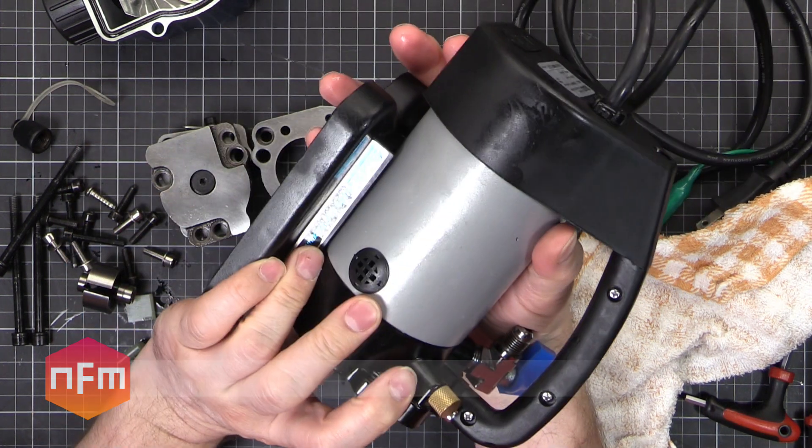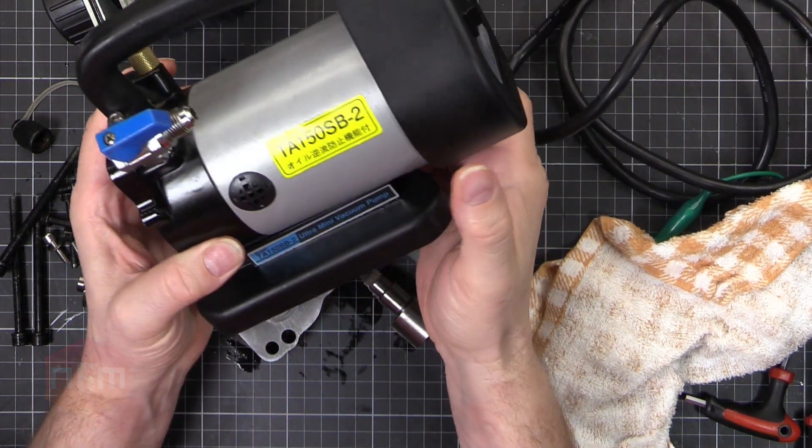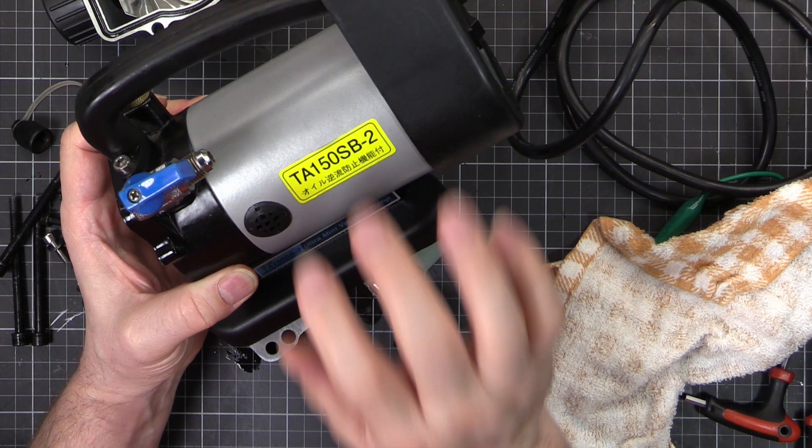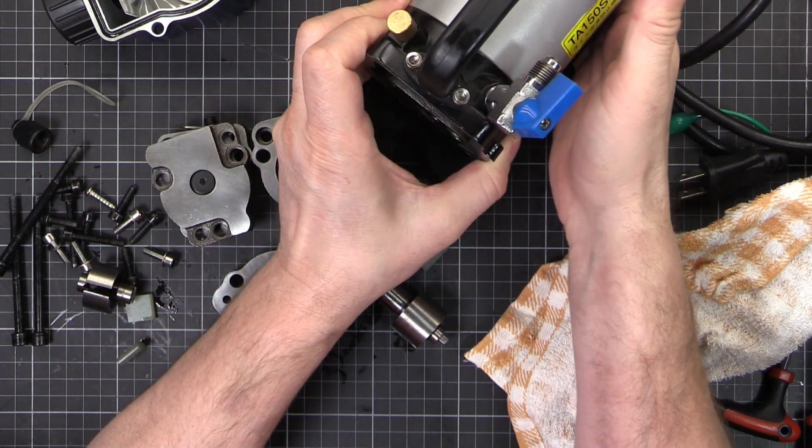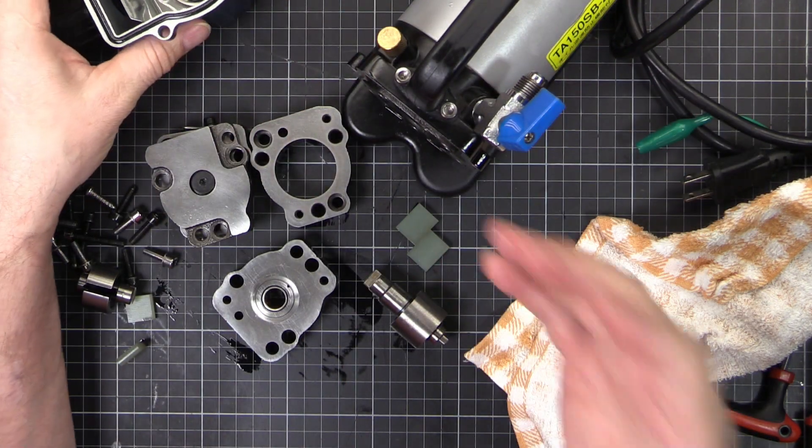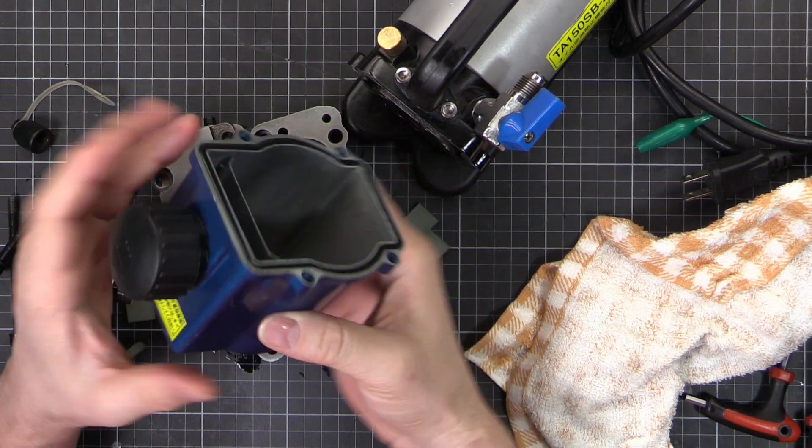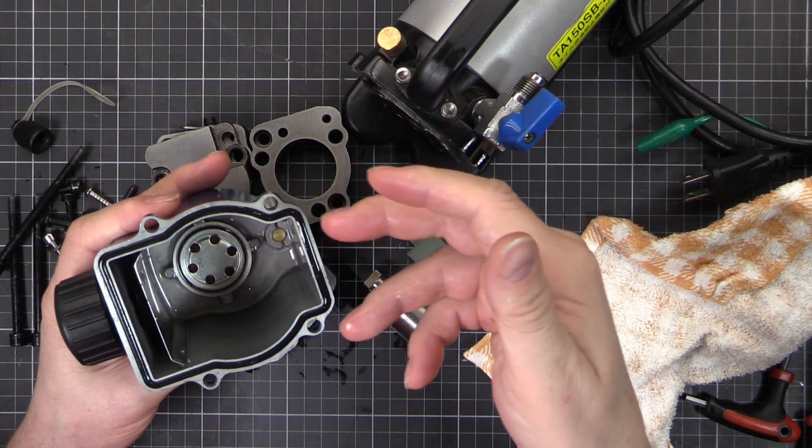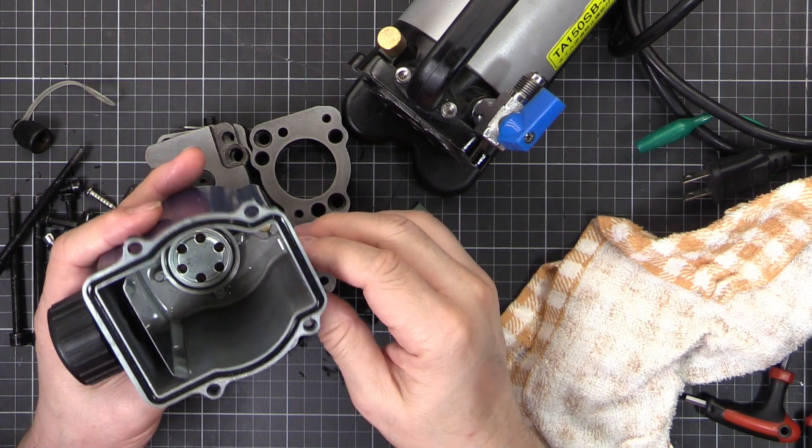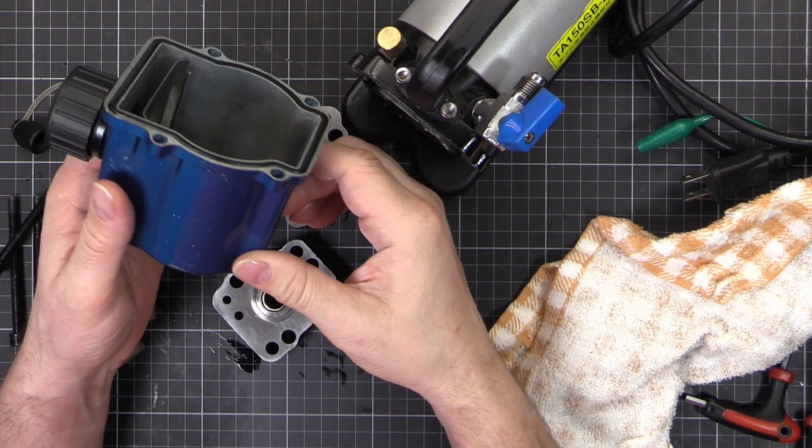It's a Tasco brand, good Japanese brand, a TA150SB-2. I think they don't make this one anymore, they've got a newer model. But I have been using it quite a bit and I thought, hey, I'll open it up, clean out all the old oil because the oil does get a bit grody half the time.